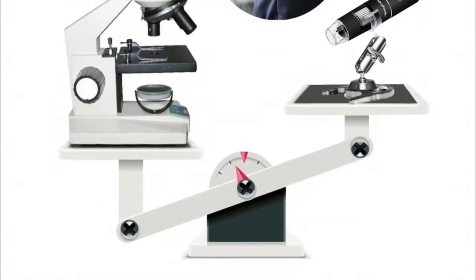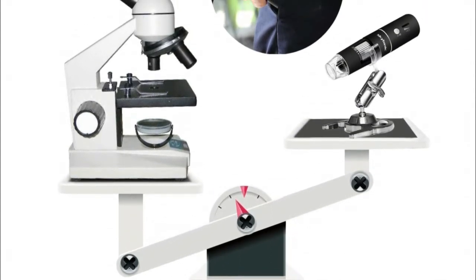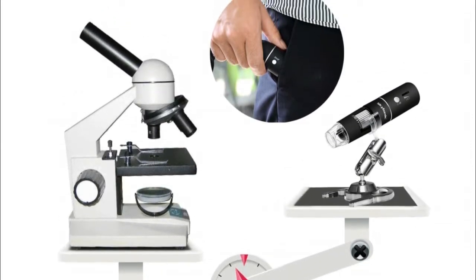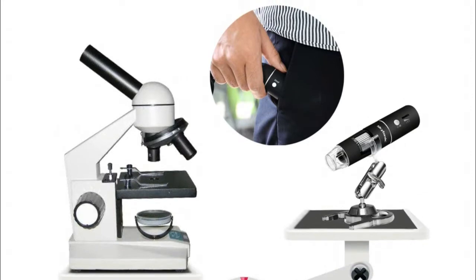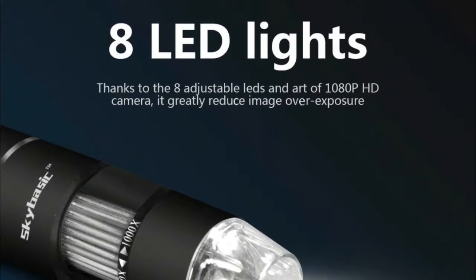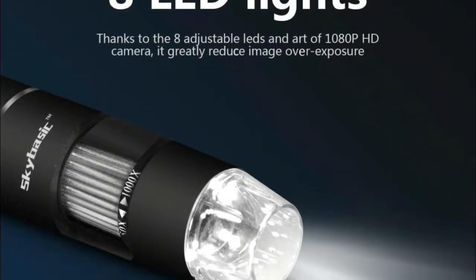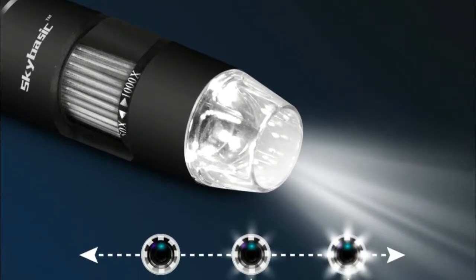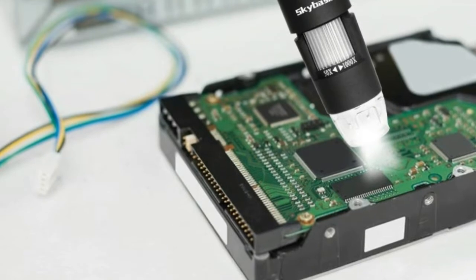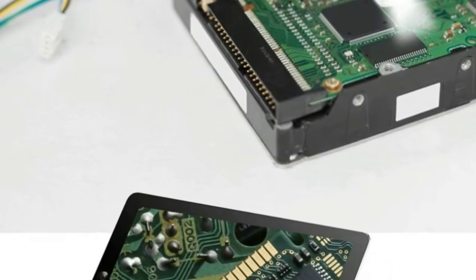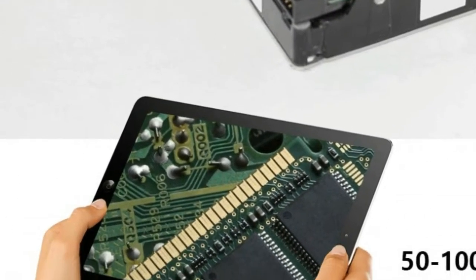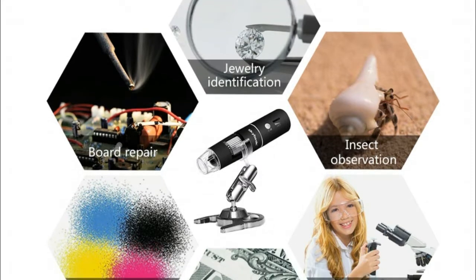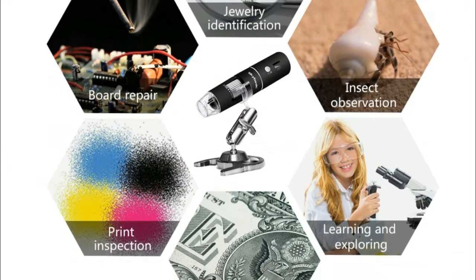8 LED lights provide excellent detail and optimal clarity, allowing the user to capture digital images at 1920x1080 resolution. Taking an image or video is as simple as tapping the image/video button on your device or pressing the related APP trigger. The Wi-Fi handheld digital microscope features a 2MP HD CMOS sensor. The SkyBosic includes a free mobile APP download and a USB charging cord. Download the free MaxSEE app and view the microscopic world right on your smartphone or tablet, so you can always take it with you when you go out exploring.